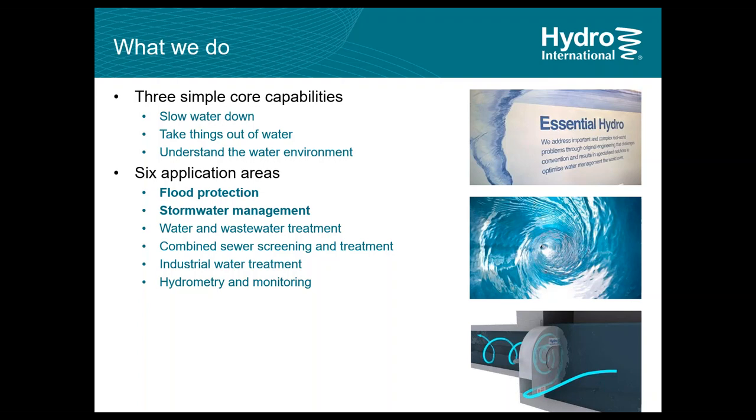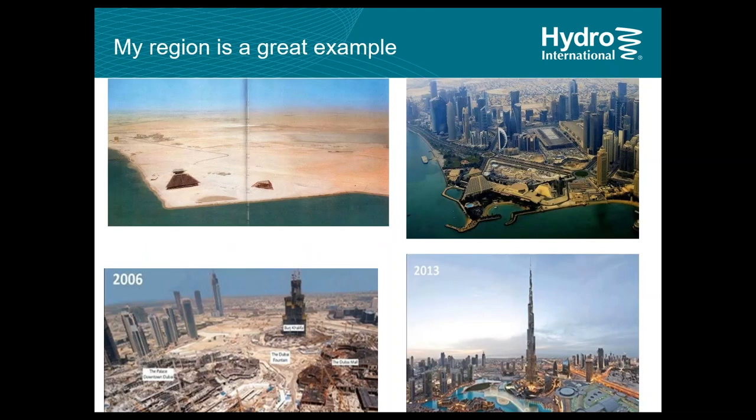Now to today's topic: the need for controlling discharge. Cities are expanding — where I'm based is a great example. On the left you see pictures from Doha and Dubai downtown areas before 2006, which were largely desert areas. In the right column you can see dense urban development. People who have been here for more than 20 years have seen these cities transform from desert areas into dense concrete jungles.